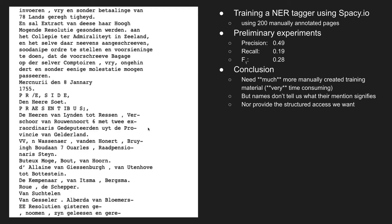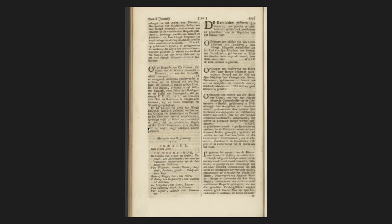Moreover, much worse is that of the actual named entities in the corpus, only 20% are found. So the results are not very useful. We could improve the results by annotating more pages, but even if we annotate 10 times as many pages, it's doubtful the results would become much better, because this is just a very challenging task. And not only won't the results get much better, they also don't give us good handles on the structure that researchers want to use. The individual meetings and resolutions cannot be found through named entity recognition.